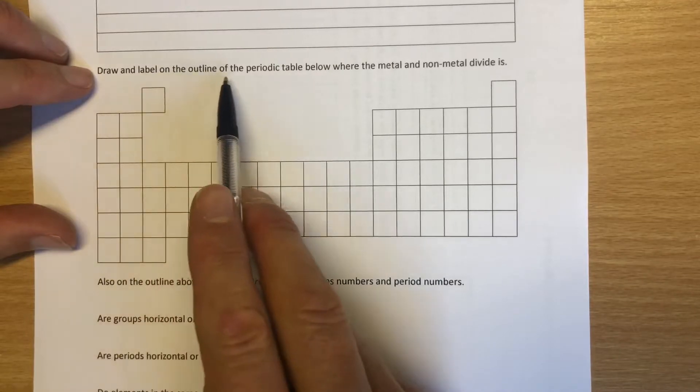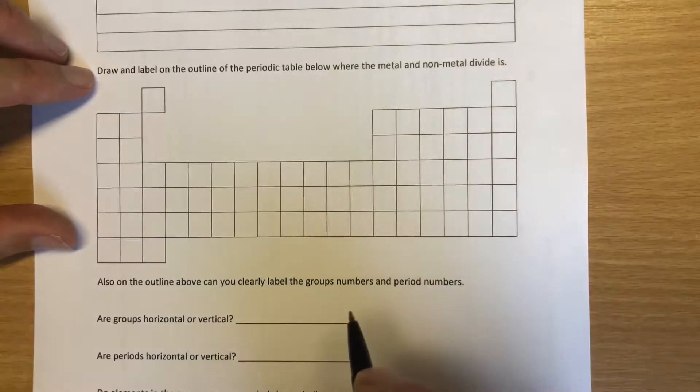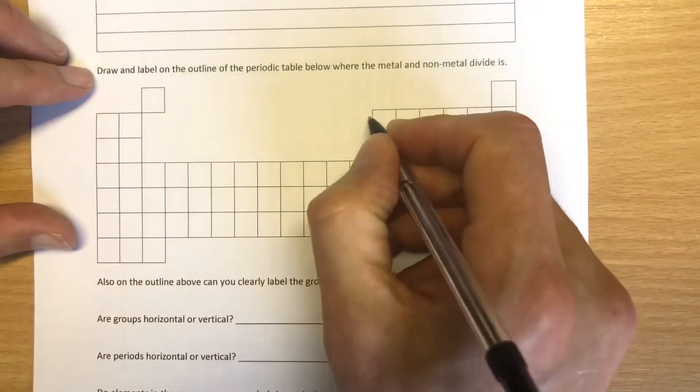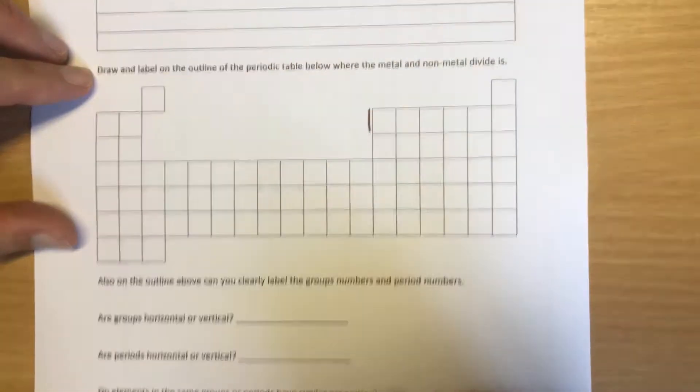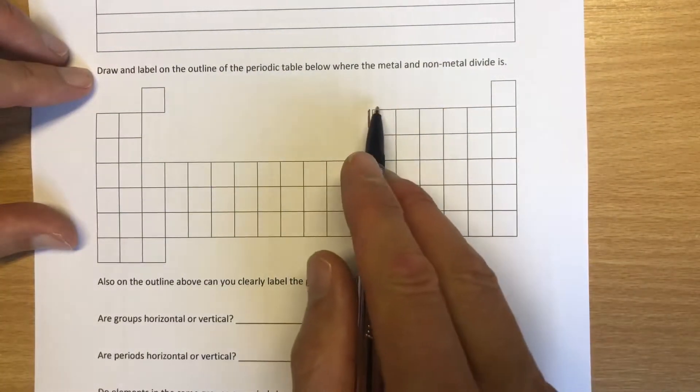Draw a line on the outline of the periodic table below and state where the metal and non-metal divide is. That's quite easy to remember: the metals live on the left and the non-metals live on the right. The dividing line starts here, right next to group three.